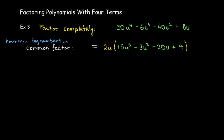inside the parentheses, still four terms, but with smaller coefficients. It might be easier to work with. So, inside the parentheses, I pair them up. The first term has a common factor of 3u squared.